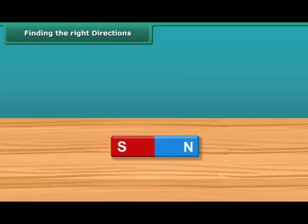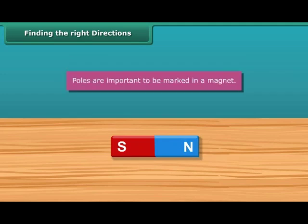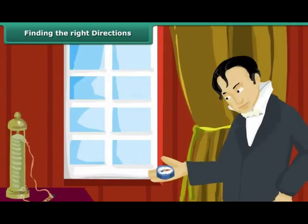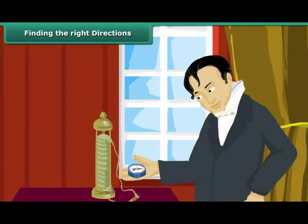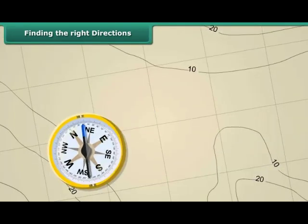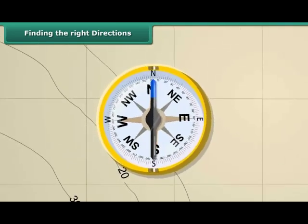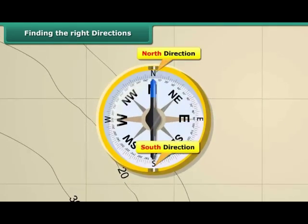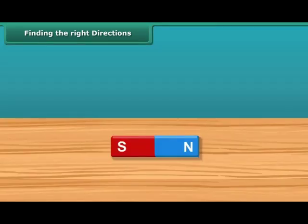Once you know about the poles of a magnet, you should also be able to mark the location of the poles. Let us now look at why poles are important to be marked in a magnet. We all know that to find directions, we use a compass. This compass has a needle that keeps moving in all directions, but when steadied, always points to the north-south direction. This helps us in finding directions accurately, which is why we need to mark the poles of a magnet.